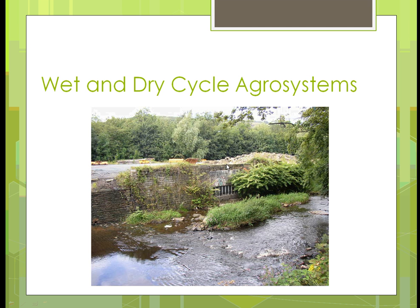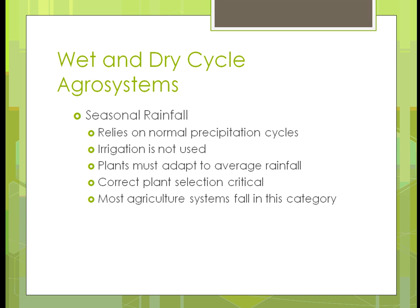Here's an example showing a wet and dry cycle area where the water level is very low right now — it's in a drier cycle. If you look at how high the wall goes up, there's vegetation growing there, so it's been a dry period for a while. But during the wet period, that will fill up. The wall is high enough to handle the amount of water expected during the wet period.